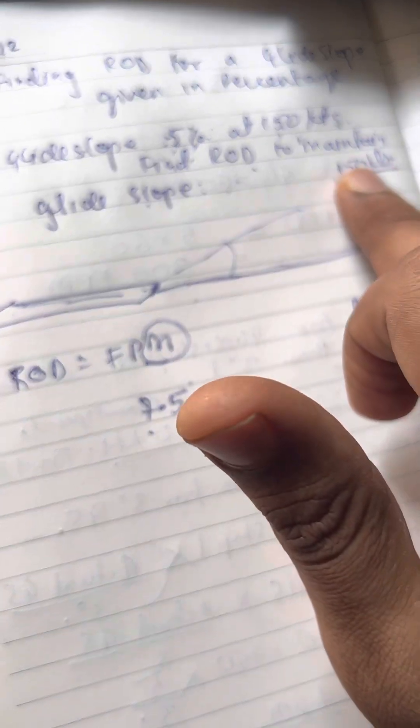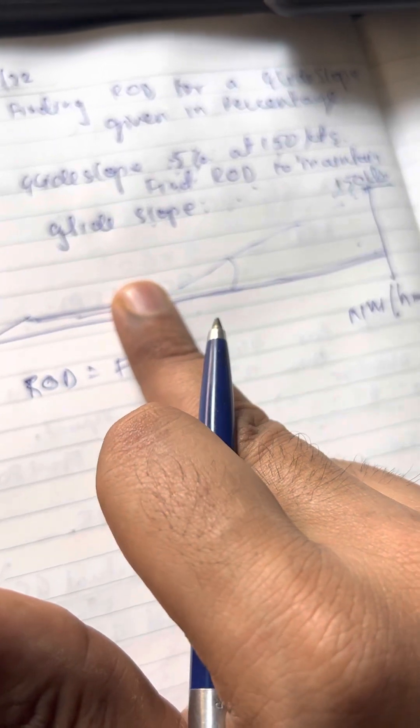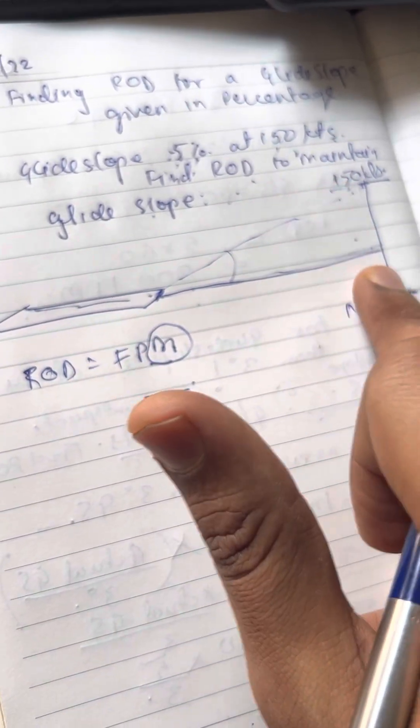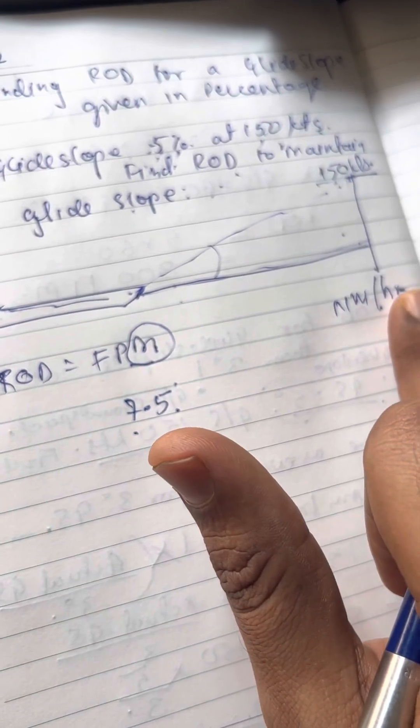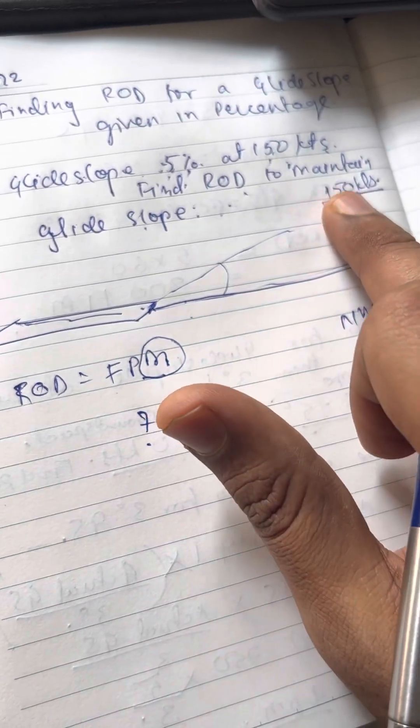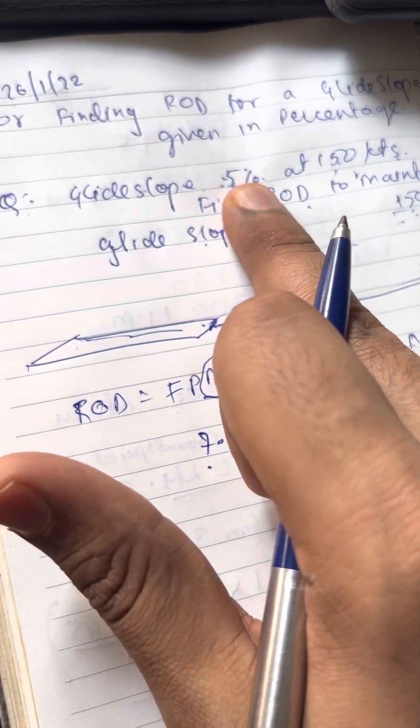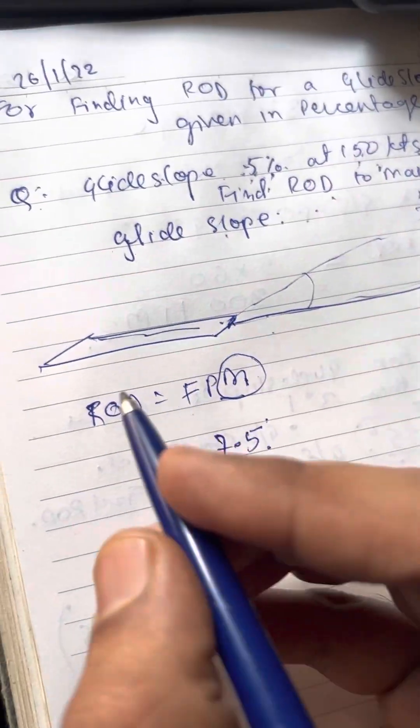So they're saying that for every 150 nautical miles at this speed, that is 150 nautical miles per hour, every hour, you are losing 7.5 nautical miles. 7.5 nautical miles because 5% of 150 knots.